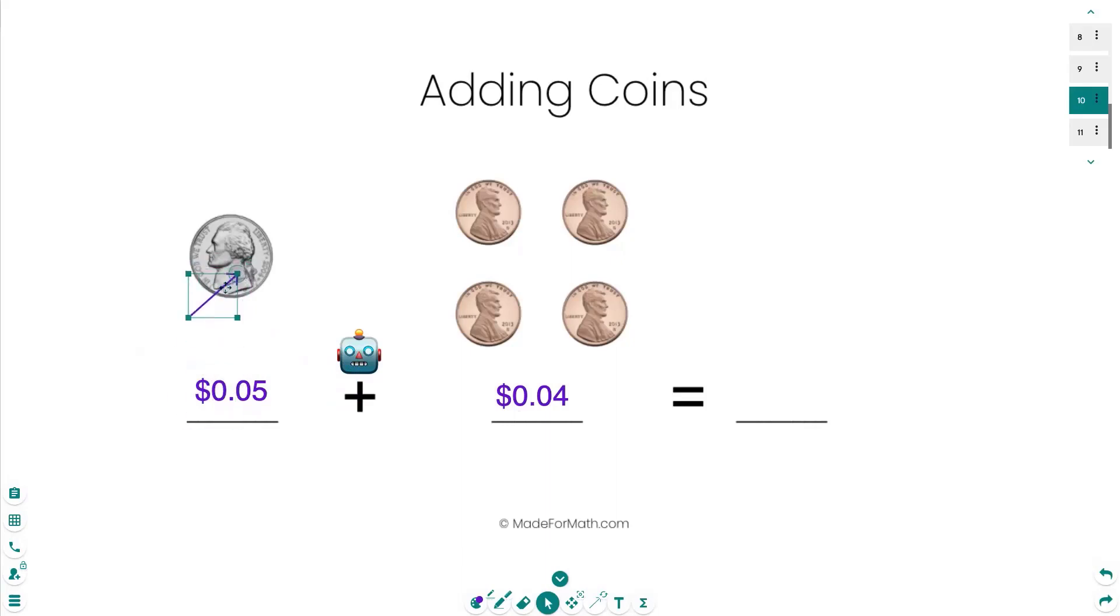So I'm going to start five. Oh, I'm going to jump. I'm jumping to pennies. So five, six, seven, eight, nine. And I have nine total cents.